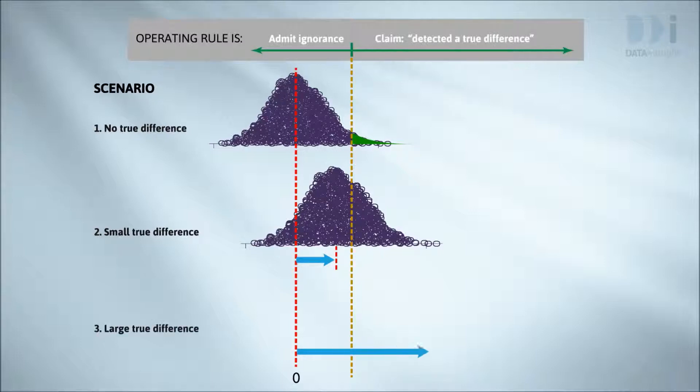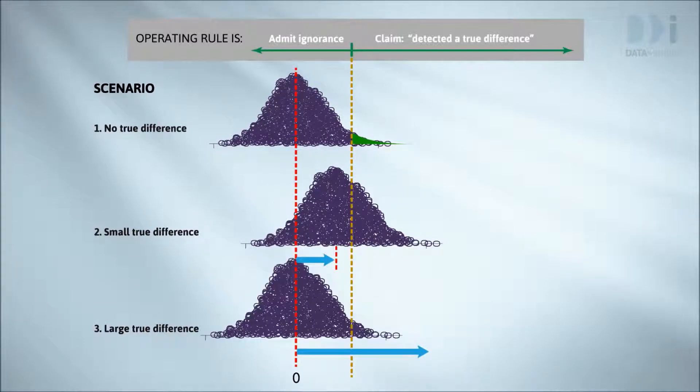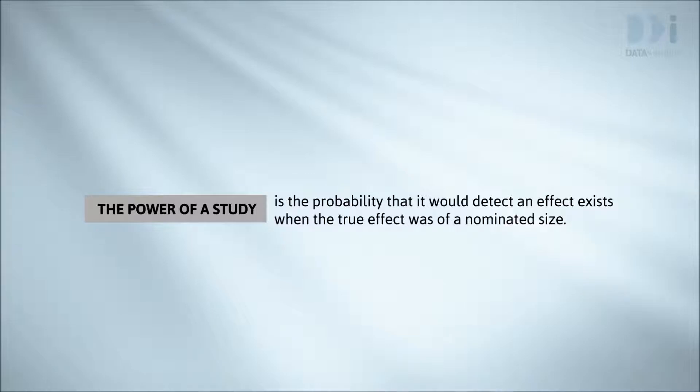If on the other hand the state of the world was like scenario three, we'd basically always end up detecting a true difference. If the real difference was this big, the experiment would reliably tell us the existence and direction of a treatment effect.